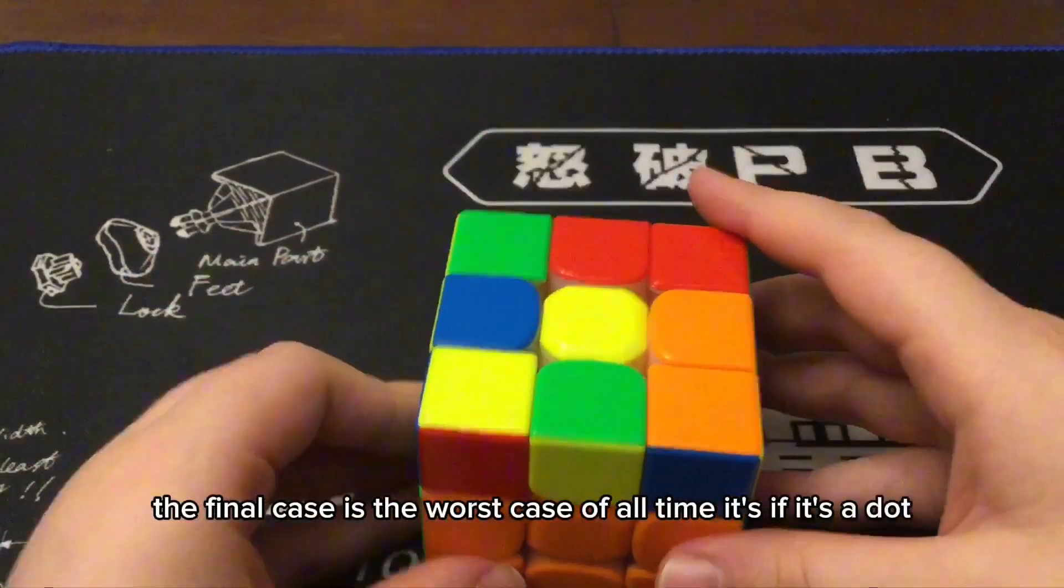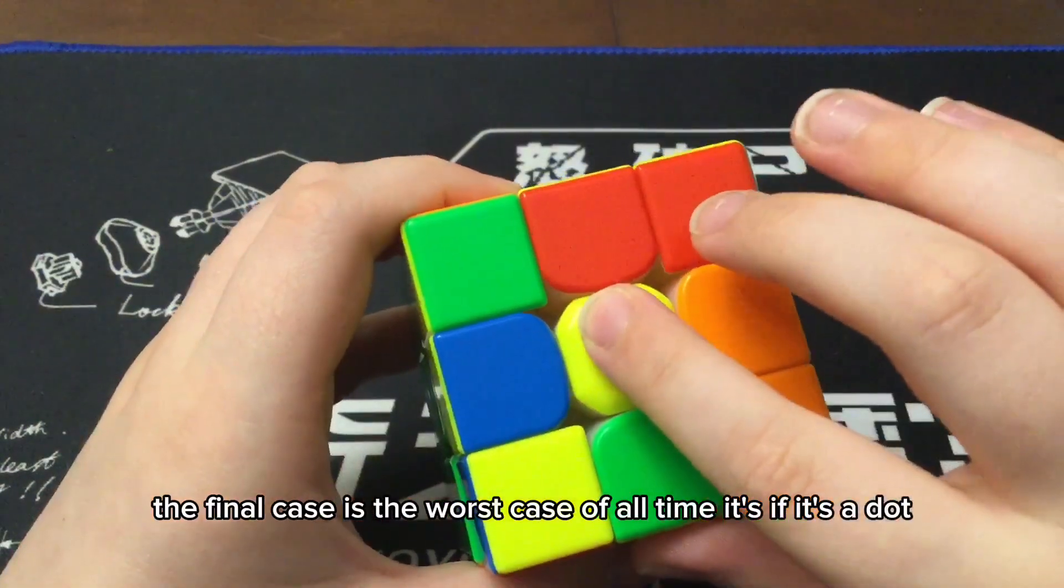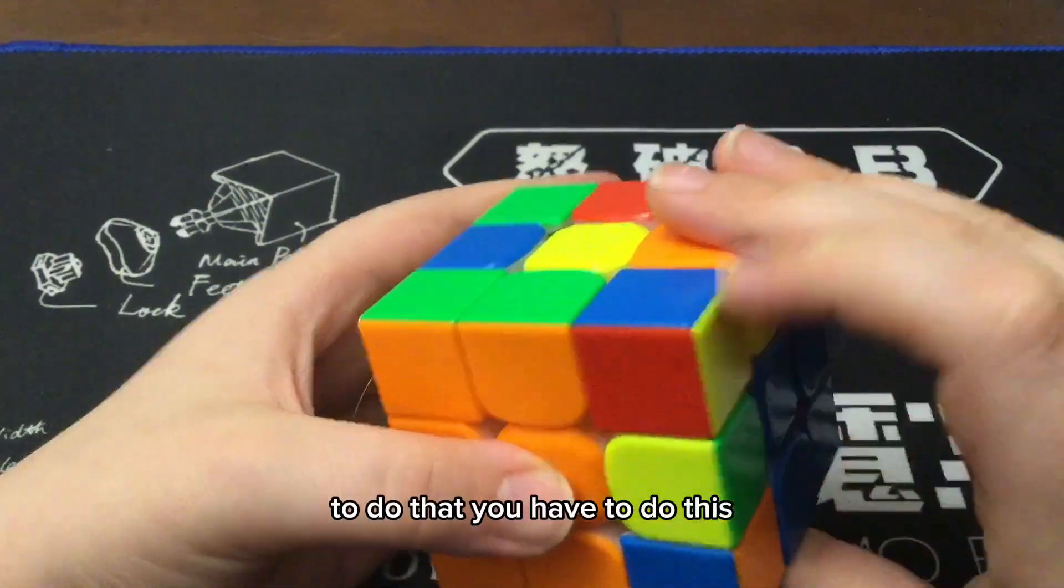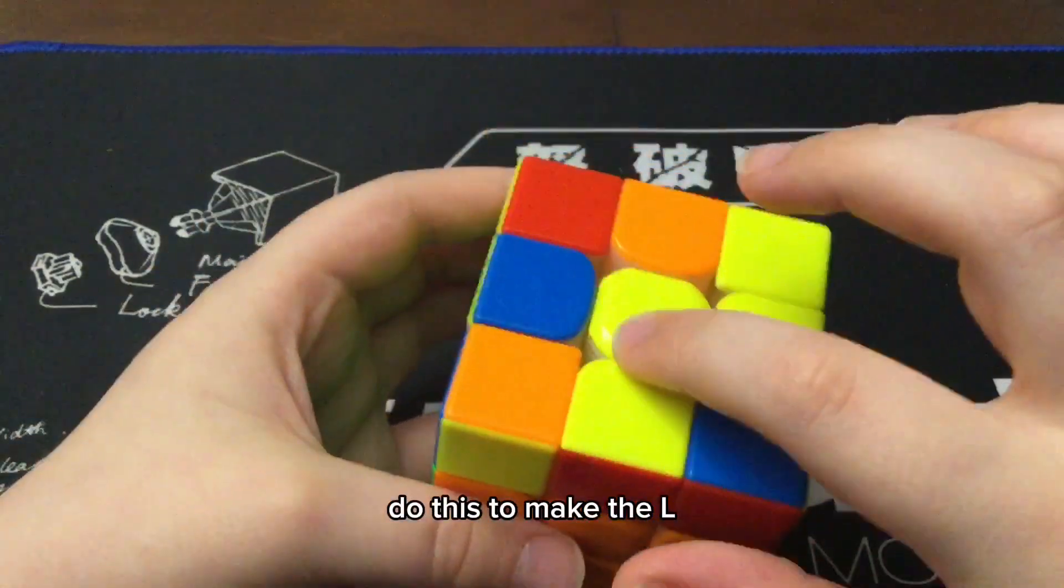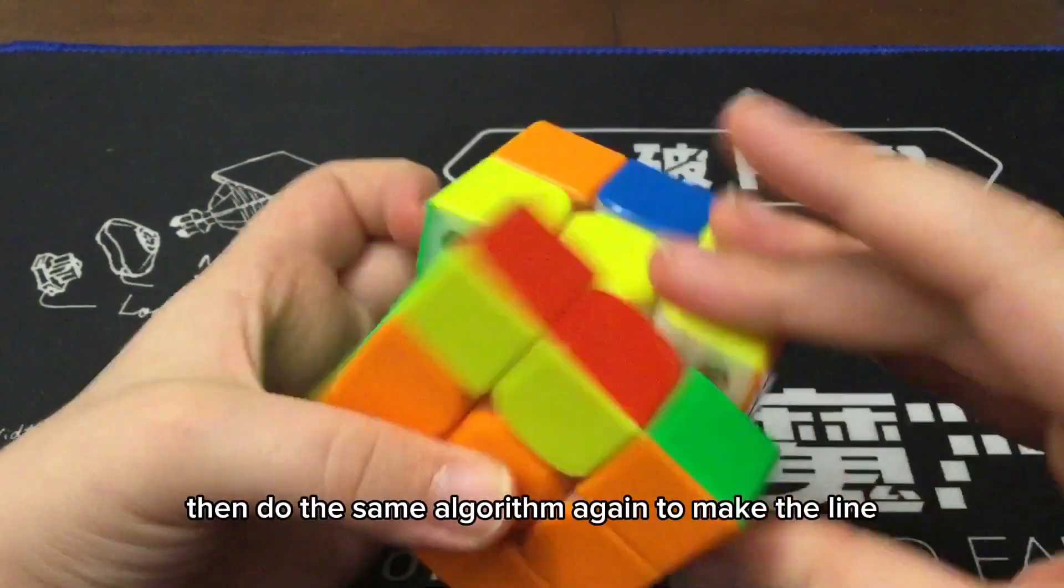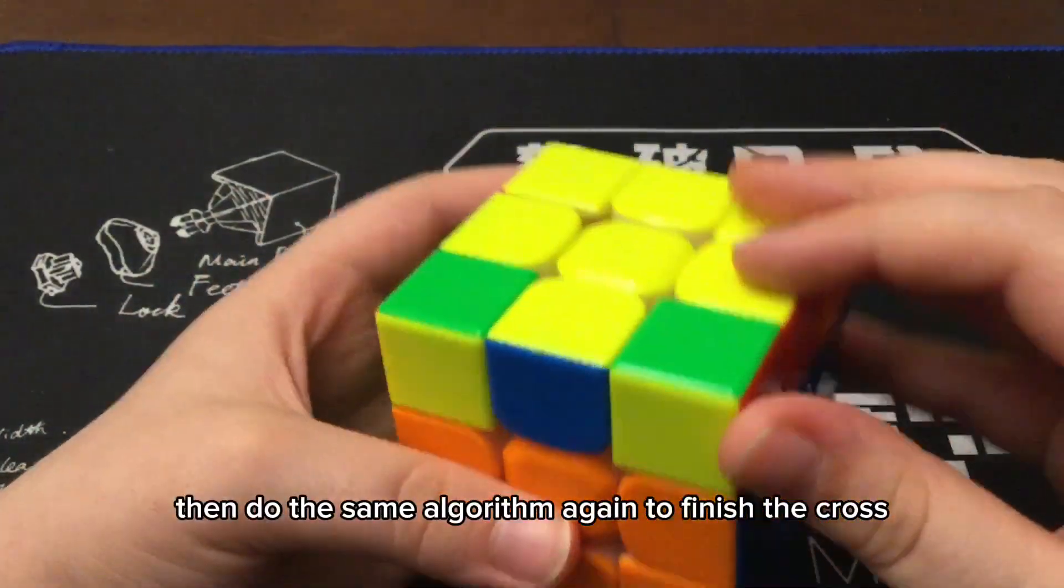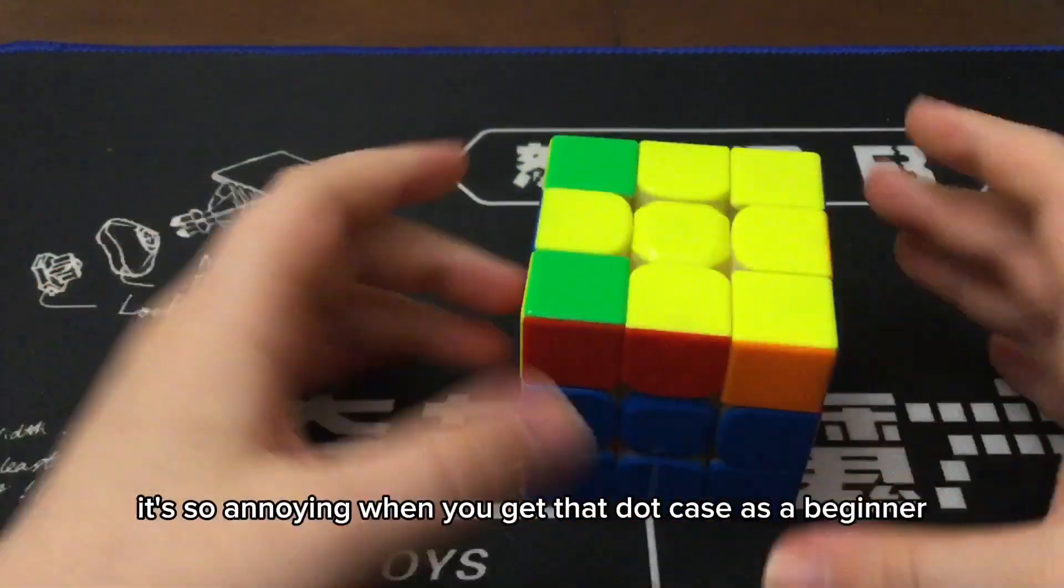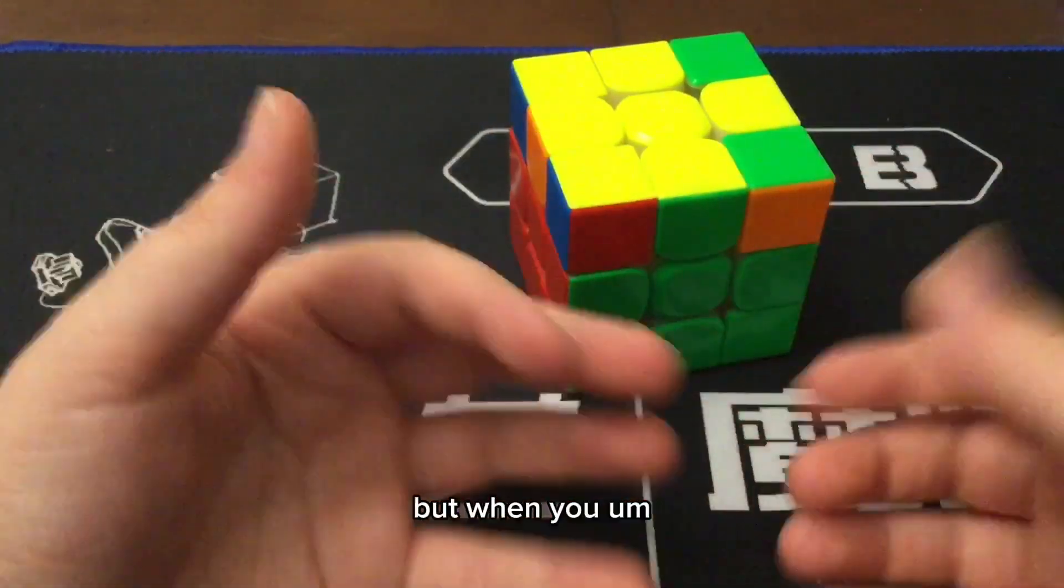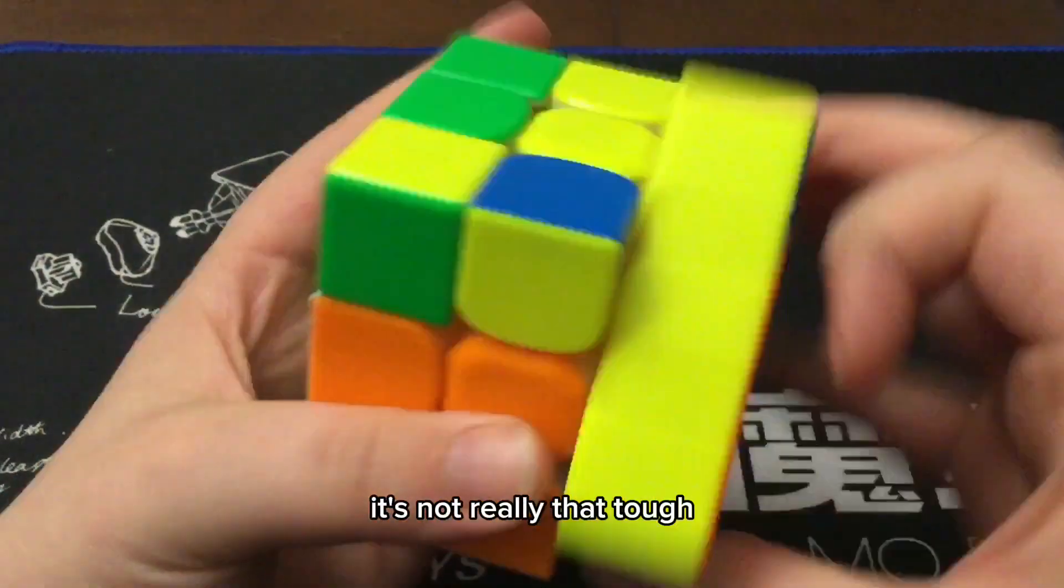The final case is the worst case of all time. It's if it's a dot. To do that, you have to do this to make the L. Then, do the same algorithm again to make the line. Then, do the same algorithm again to finish the cross. It's so annoying when you get that dot case as a beginner, but when you stop being a beginner, it's not really that tough.